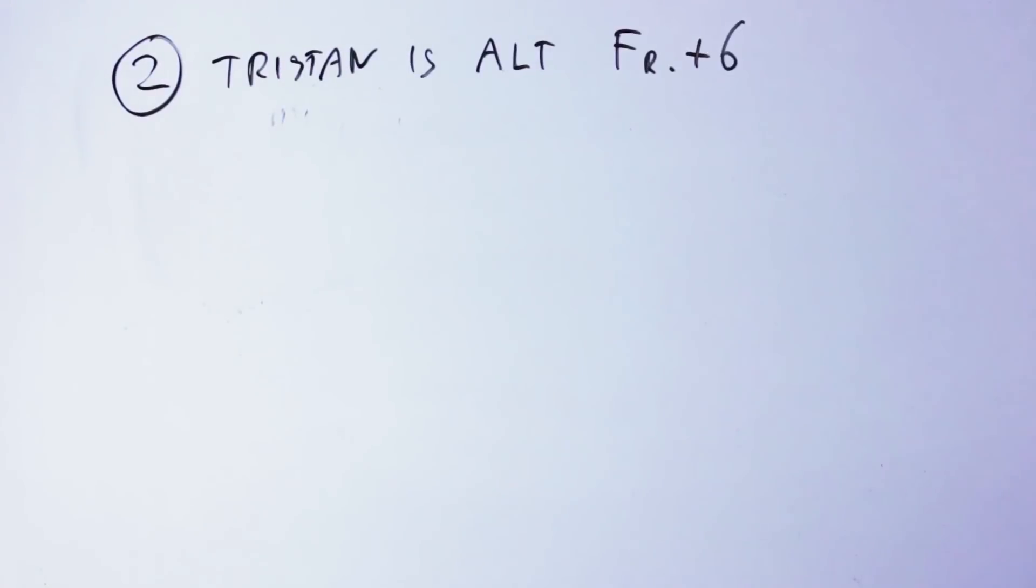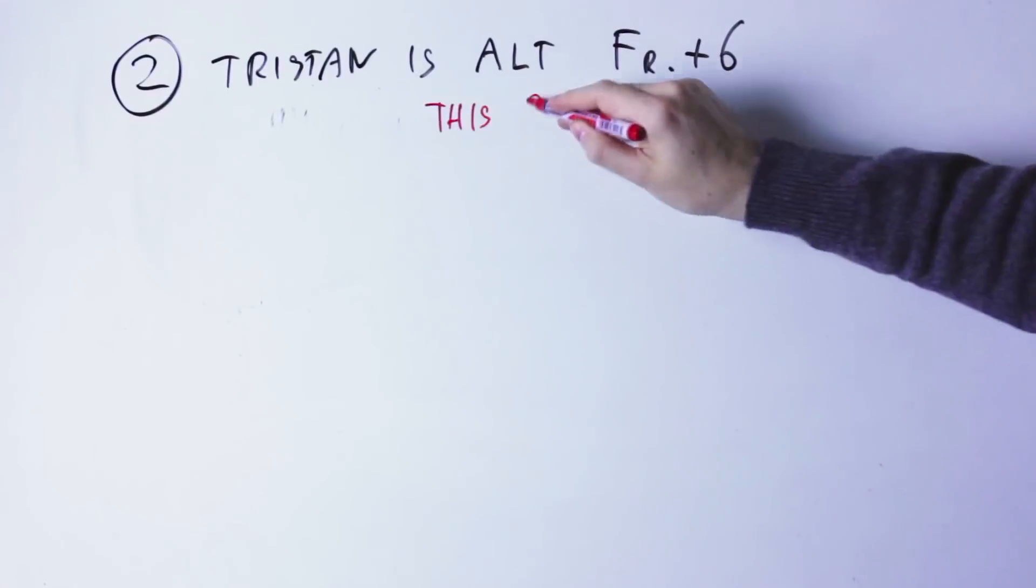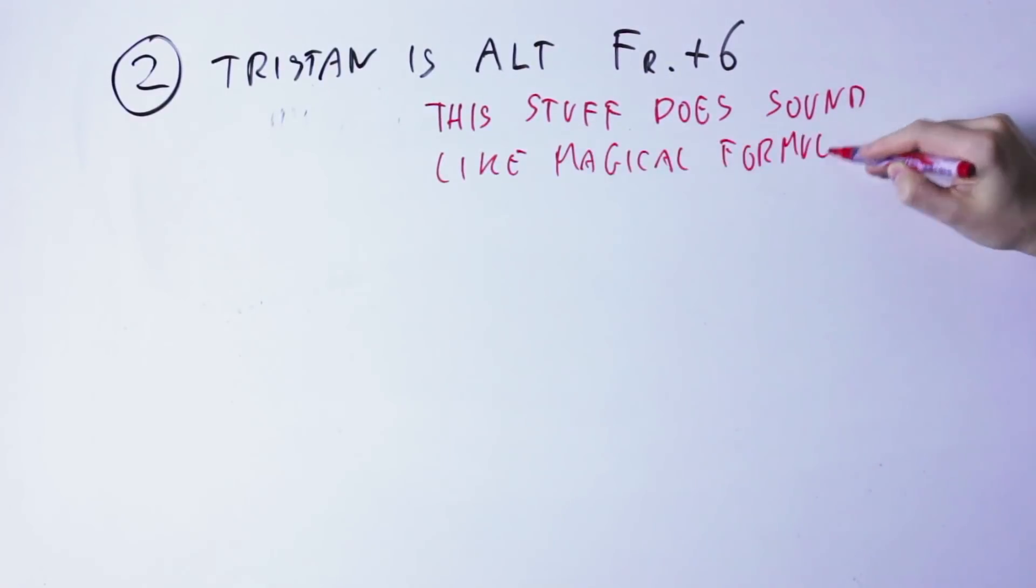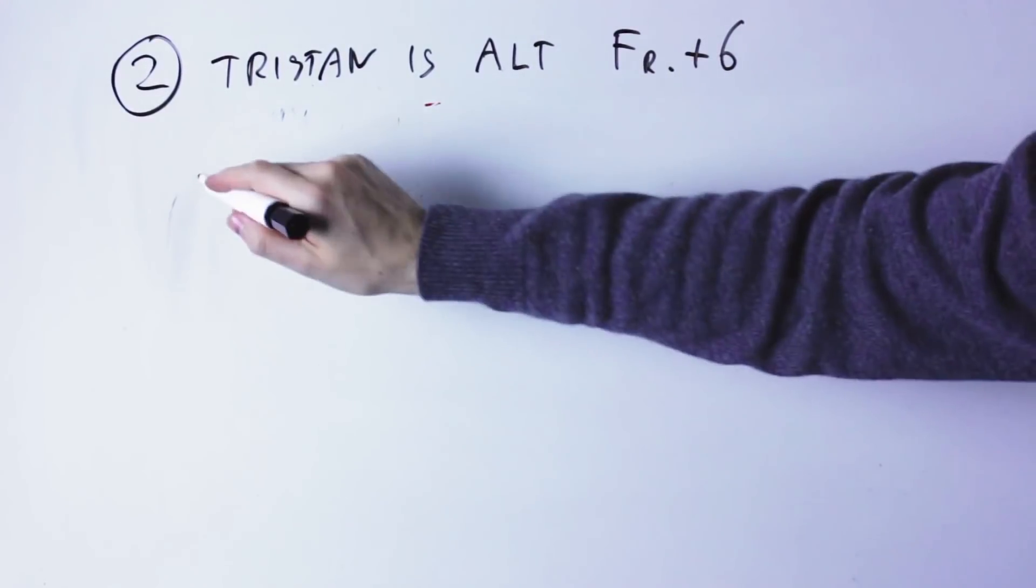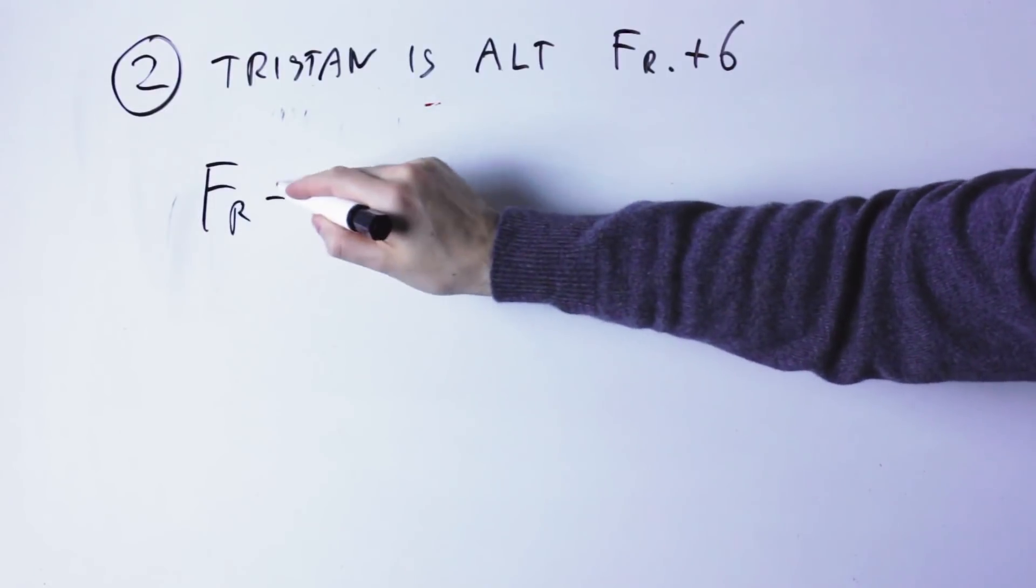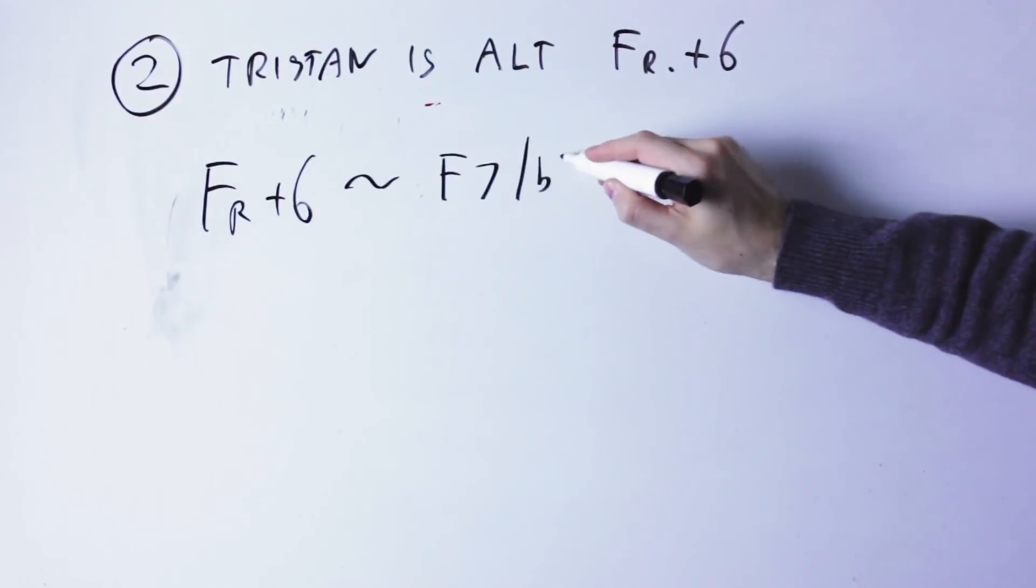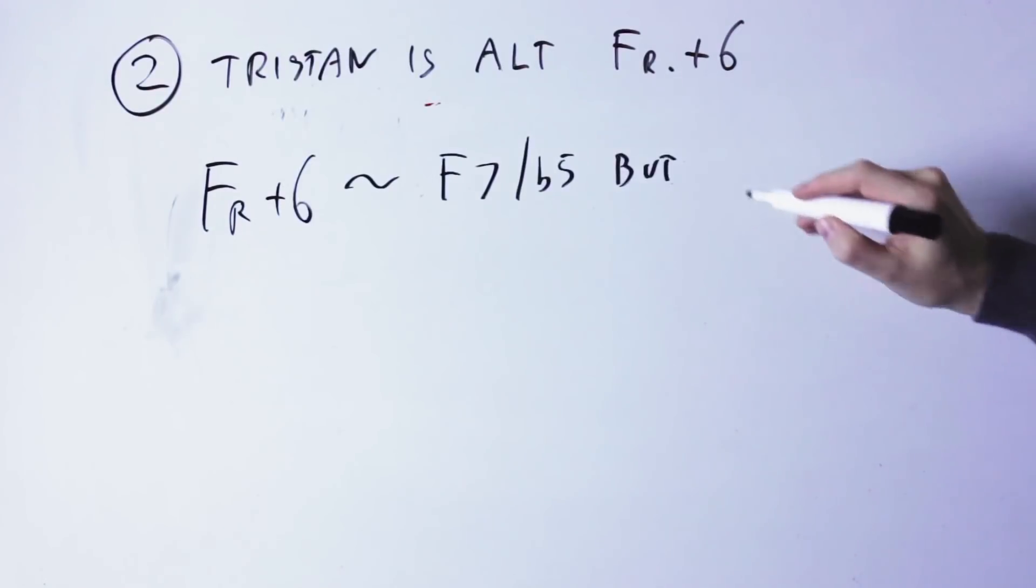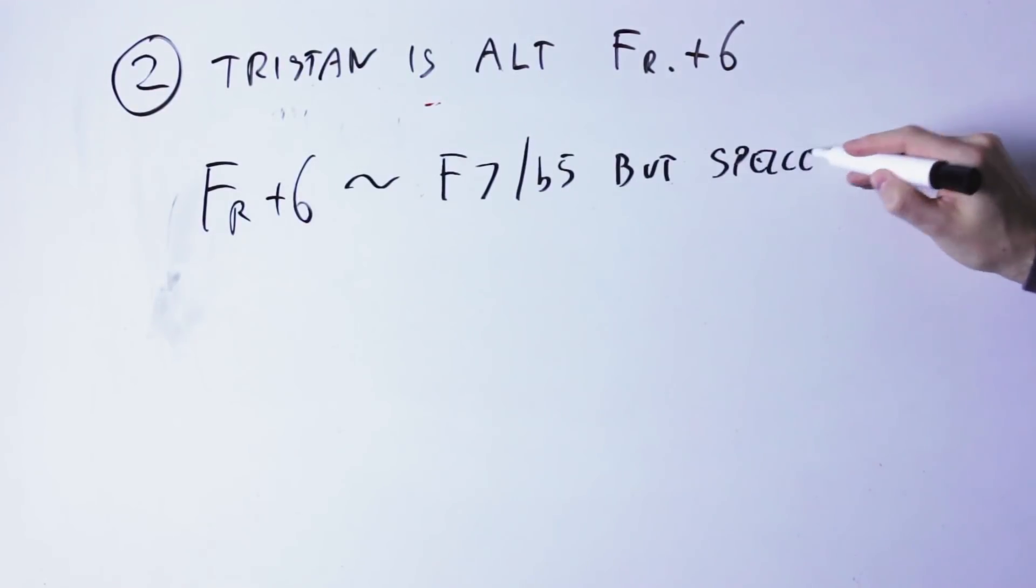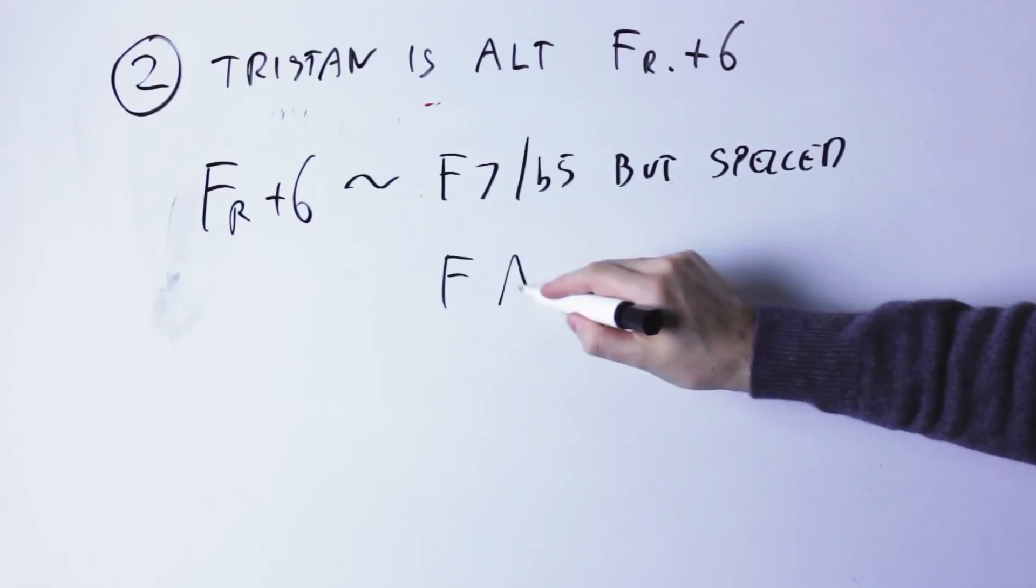Explanation number two, the Tristan chord is an altered French augmented sixth chord. Without going into the full theory of augmented sixth chord, a French augmented sixth is a chord that has the same notes as an F dominant 7 with a flat 5, but spelled differently.